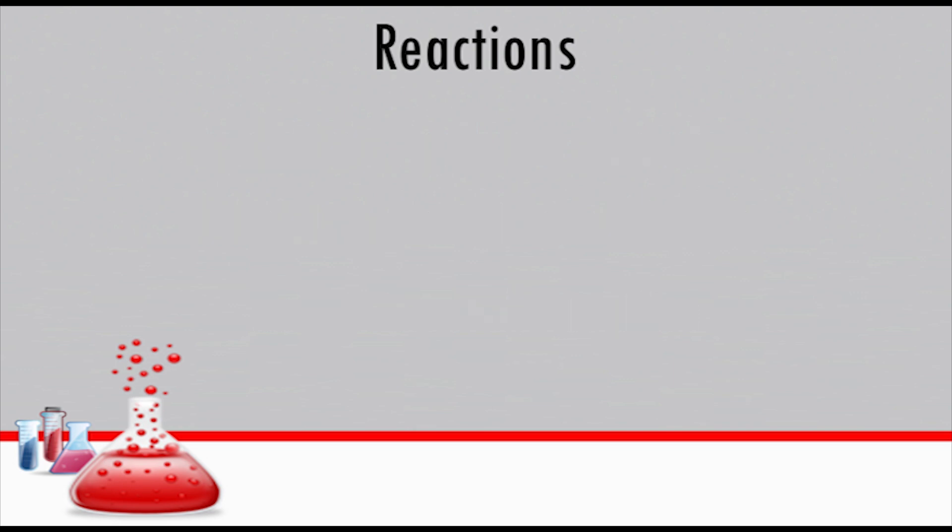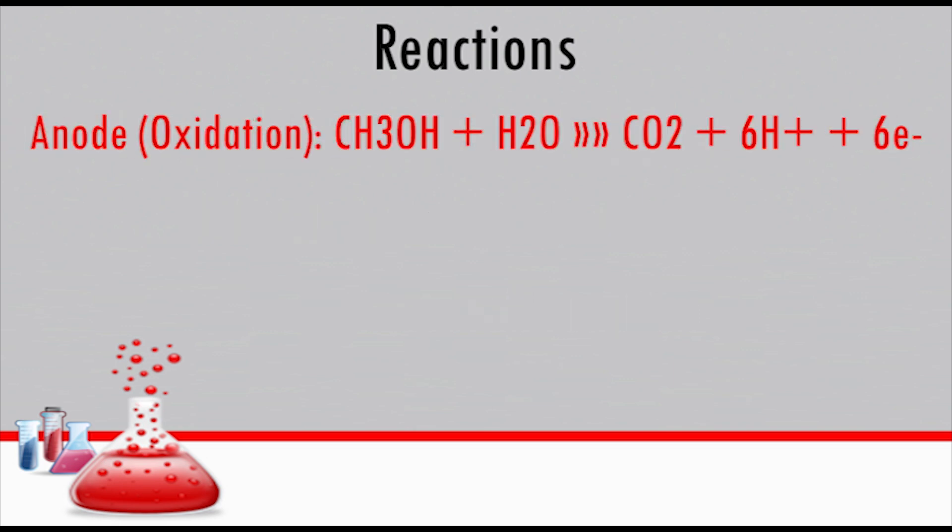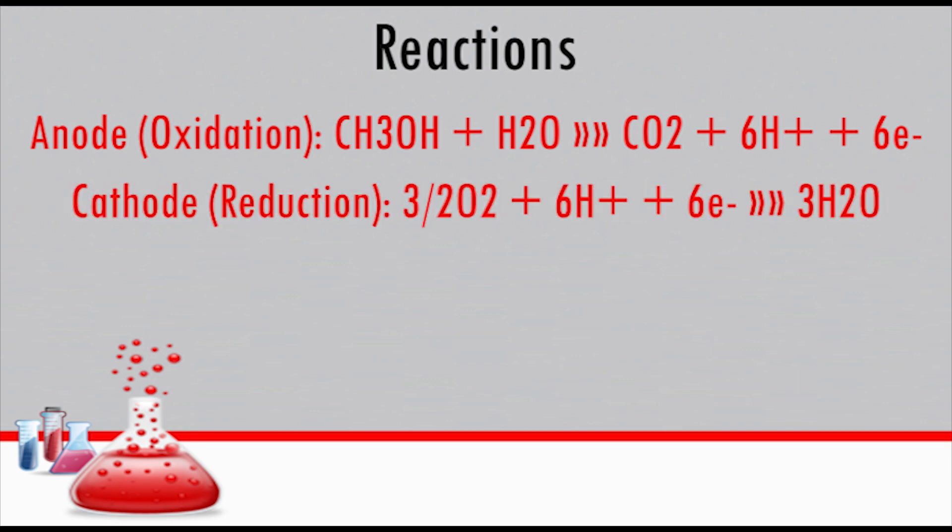At the anode side of the cell, an oxidation reaction takes place, producing the electrons that will do work. Conversely, on the cathode side, a reduction reaction takes place when the electrons rejoin the rest of the compounds.